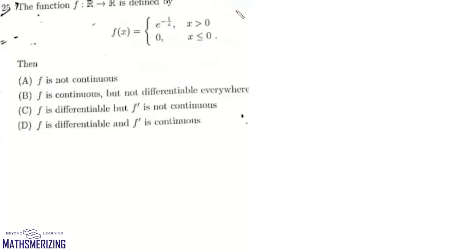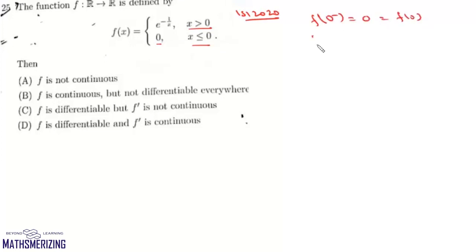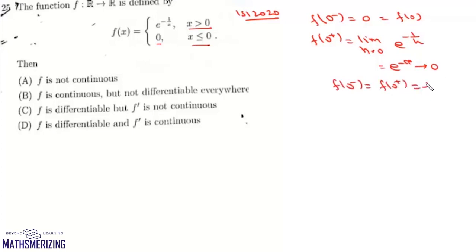A similar question was asked in the ISI 2020 PQA paper. The function is f(x) = e^(−1/x) when x > 0, and 0 when x ≤ 0. For continuity at 0: f(0⁻) = 0 (constant), and f(0⁺) = limit h→0 of e^(−1/h) = e^(−∞) = 0 = f(0). So f is continuous at x = 0, and continuous on ℝ.